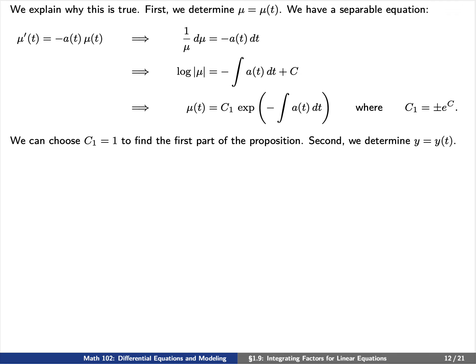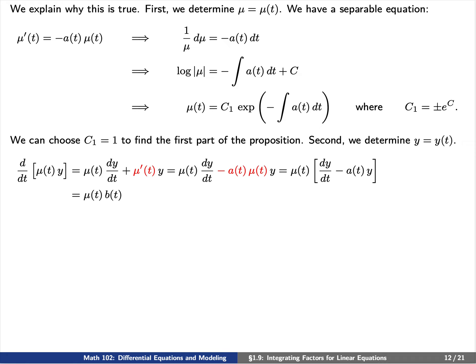Next, we need to determine a particular solution y of t. We'll do this by multiplying both sides of our differential equation by mu. Let's consider the derivative of the product mu of t times y. Using the product rule, we find that this equals mu times dy/dt plus mu-prime times y. We will substitute mu-prime with negative a of t times mu of t, shown here in red. This means we can factor out mu of t to find that this equals mu of t times dy/dt minus a of t times y. But since y is a solution to our non-homogeneous differential equation, we find that this equals mu of t times b of t.